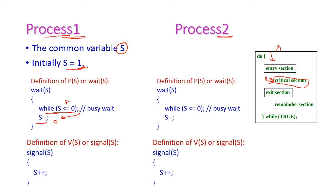Now process 2 will also try to come to the critical section. It comes to the wait operation with the same S. Currently the S value is 0, since process 1 already decremented it. Process 2 will execute the while condition: S less than or equal to 0. The condition is true, so it will be stuck in the while loop and will not come out. Process 2 is busy waiting right now.